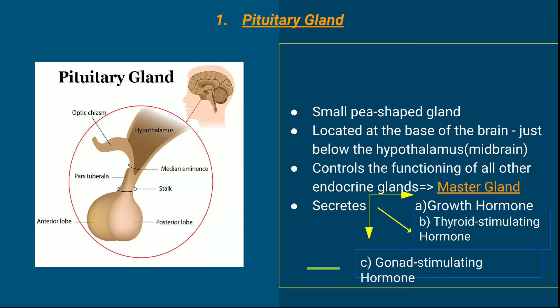The first endocrine gland we will discuss is the pituitary gland. This is called the master gland because it controls all the other endocrine glands of our body. It is a small gland located at the base of the brain, just below the hypothalamus or the mid-brain, as you can see in the picture.